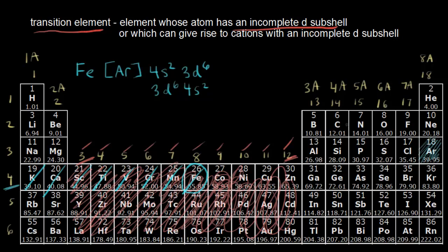And when I look at the d orbitals, so when I look at the d orbitals for the electron configuration, I can see that there are six electrons in my d orbitals. Well, that's an incomplete d subshell, right? Because I can fit a total of 10 into my d orbitals. And so iron would be an example of an element whose atom has an incomplete d subshell. So iron is a transition metal.